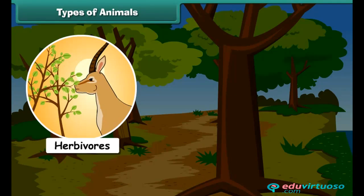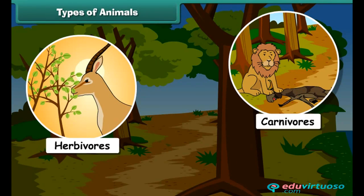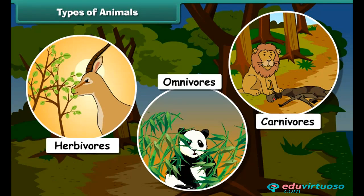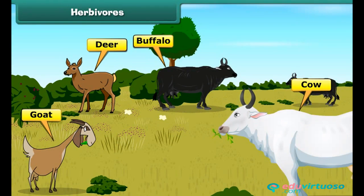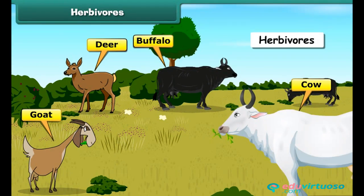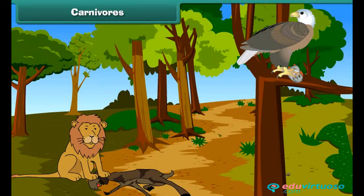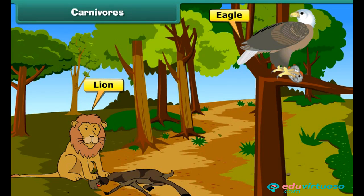All animals have different types of eating habits. Some animals like cow, deer, goat, and buffalo eat only plants — they are known as herbivorous animals. Some animals like tiger, eagle, and lion feed on other animals; they eat flesh and get nutrition. These are known as carnivorous animals.